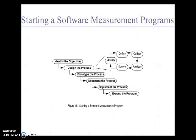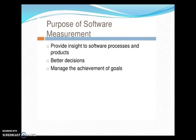Starting a software measurement program involves several stages: identify the objectives, and design the process. It involves a cyclic procedure — identify, define, collect, analyze, and evolve. Then prototype the process, document the process, implement the process, and expand the program.